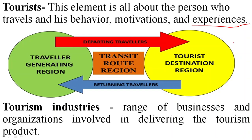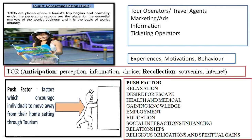The tourism industry includes all businesses and organizations involved in delivering the tourism product: hoteliers, accommodation providers, transport providers, car rentals, airlines, guides, entertainment providers like theme parks, and shopping malls. Some products are made specifically for tourists, others for residents but used by both — we call these resident-oriented and tourist-oriented products. Together they form the tourism industry.